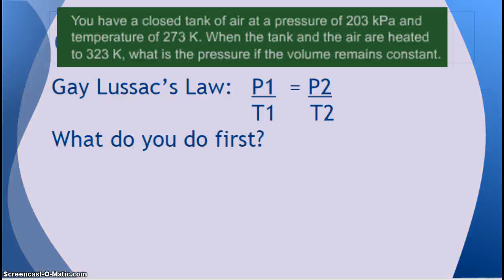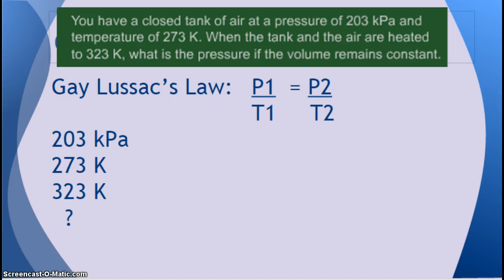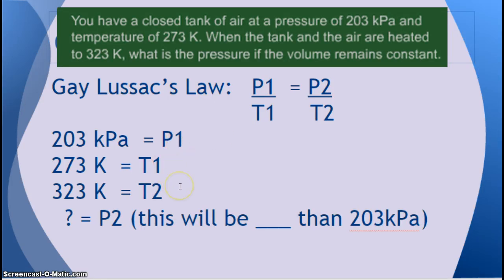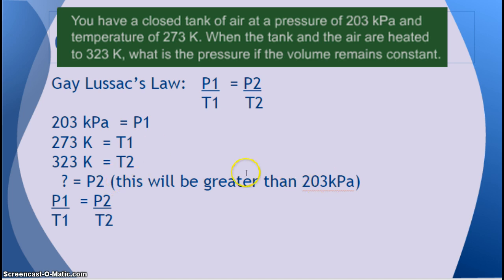Let's do a problem. You have a closed tank of air at a pressure of 203 kilopascals and a temperature of 273 Kelvin — make sure you know your units: K is Kelvin, kPa is kilopascals. When the tank and the air are heated to 323 Kelvin, what is the pressure if the volume remains constant? List what you know, go back and identify P1, T1, and T2. Since the temperature went up from 273 to 323, pressure is also going to go up, so P2 will be greater than 203.